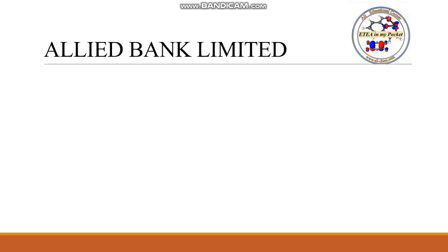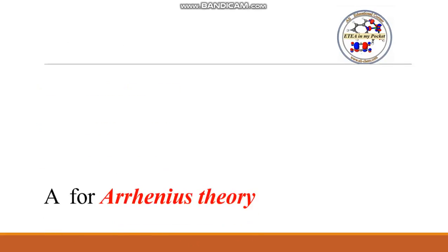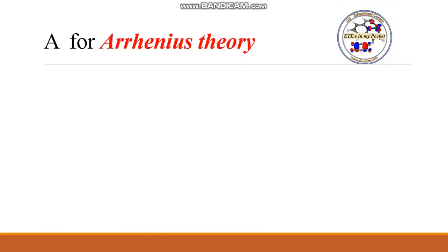As you know, Allied Bank Limited — there is a bank in Pakistan. In 'Allied Bank Limited,' A stands for Allied, B stands for Bank, and L stands for Limited. So A is for Arrhenius theory, B is for Brønsted-Lowry theory, and L is for Lewis theory. Did it become easy? Let's go further.